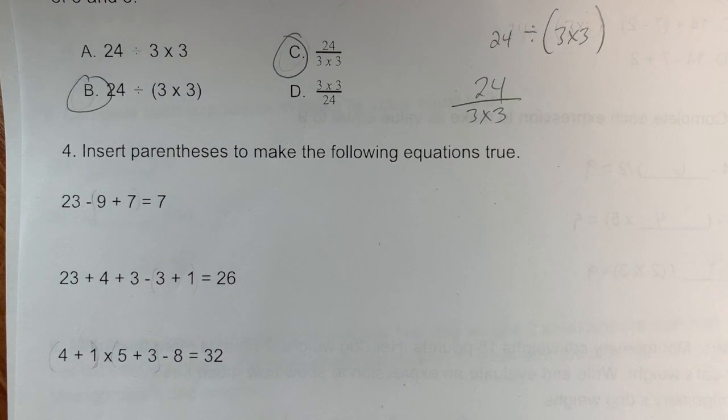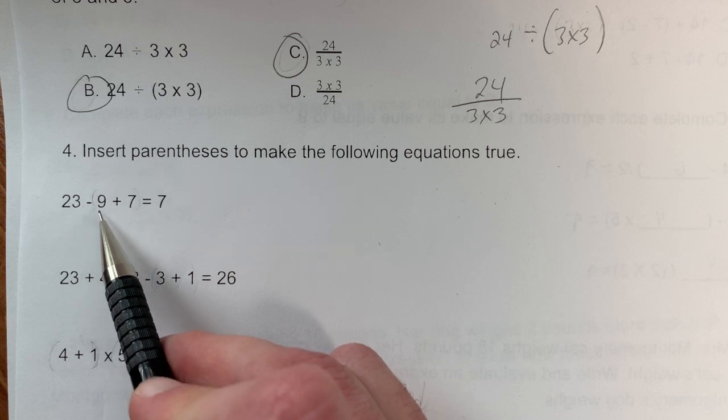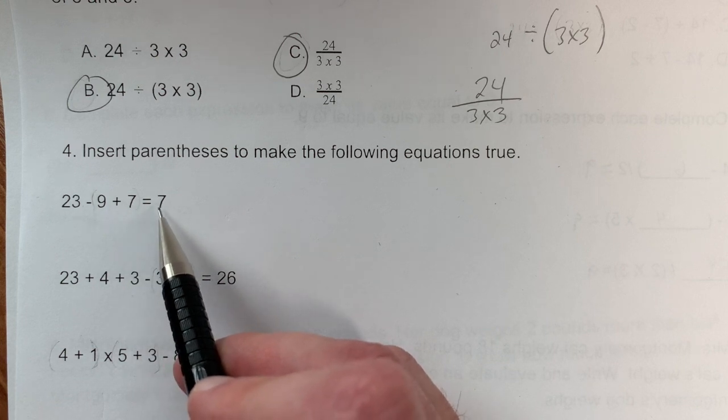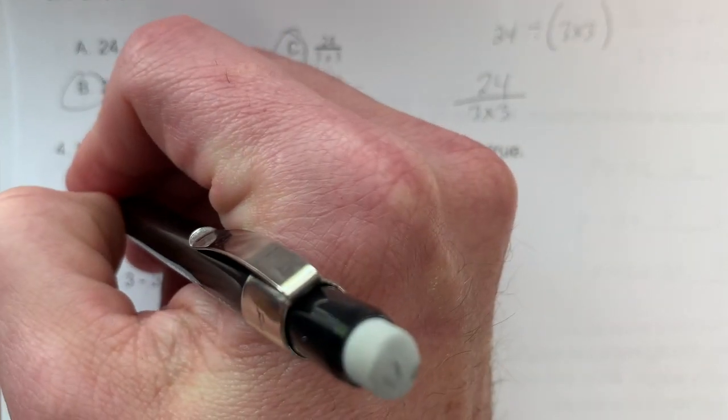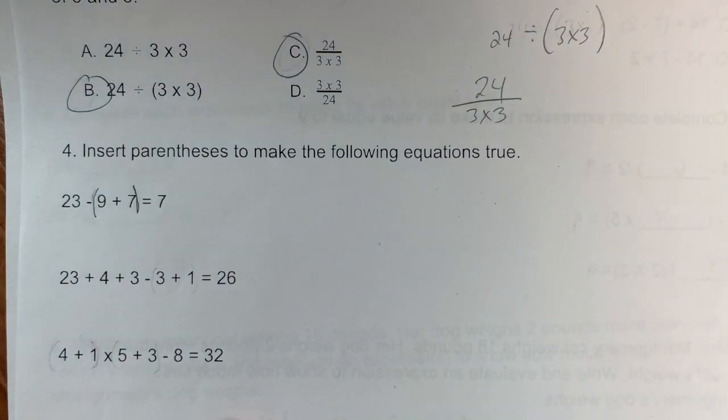Problem 4a: Insert parentheses to make the equation 23 - 9 + 7 equal 7. Going left to right: 23 - 9 = 14, then 14 + 7 = 21, which doesn't work. If I group 9 and 7 together: 9 + 7 = 16, then 23 - 16 = 7, which works.